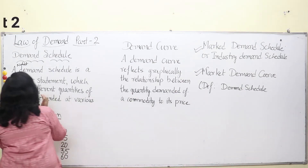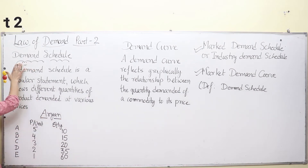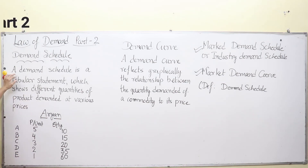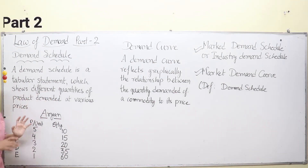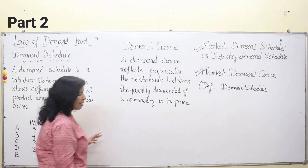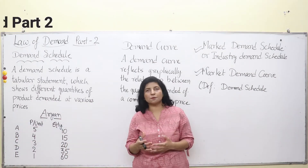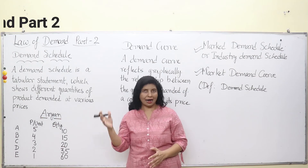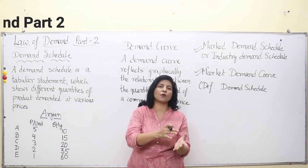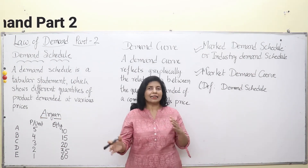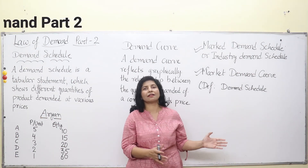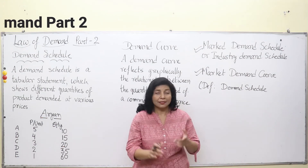Let's start with our topic: the demand schedule. A schedule is any statement in tabular form. So a demand schedule is a tabular statement which shows different quantities of a product demanded at various prices. When you go to the market, your behavior is such that when prices are high you tend to purchase lower quantities, and when prices are low you tend to purchase higher quantities — that is the inverse relationship between price and quantity demanded.